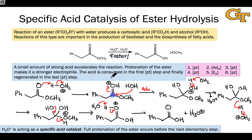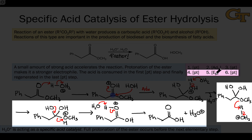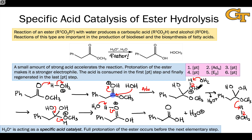Now that we've drawn the mechanism as a whole, I want to draw your attention to two things. First, notice that the mechanism involves six steps in two stages: proton-on, a nucleophilic addition step, and proton-off; then proton-on, a beta elimination step, and proton-off. So this dance of acid catalysis — proton-on, the business, and proton-off — happens twice within this mechanism.